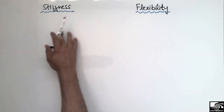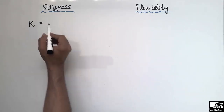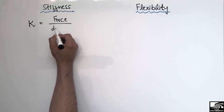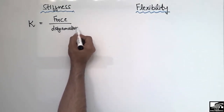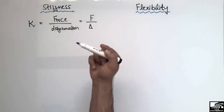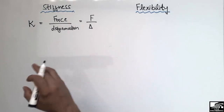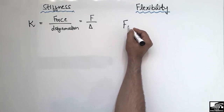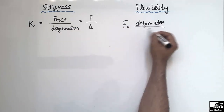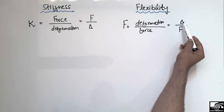First, let's define these terms. Stiffness is represented by k, and it is defined as the ratio of force over deformation — that is, how much force is required to produce a unit deformation, or simply F divided by delta. Flexibility, on the other hand, is the opposite of stiffness. It is the ratio of deformation over force — delta divided by F.